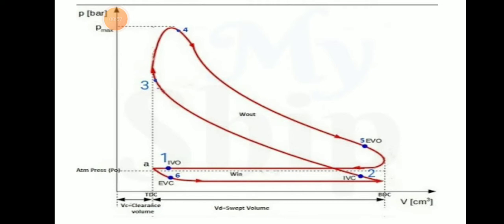From 2 to 3, there is the compression stroke. Then from 3 to 4, there is the power stroke with maximum pressure P-max. Just before TDC at point 3, fuel injection begins, and by point 4, the injection ends. Points 4 to 5 represent the expansion stroke, also called the power stroke.